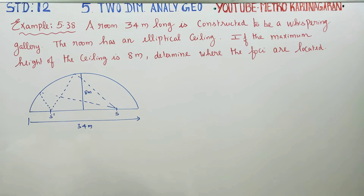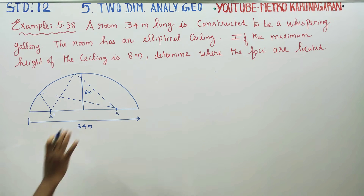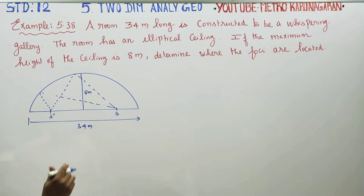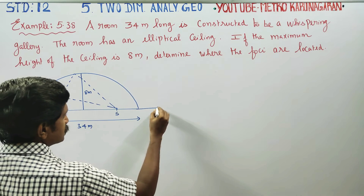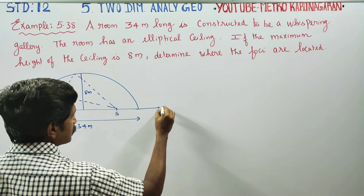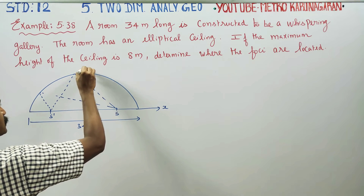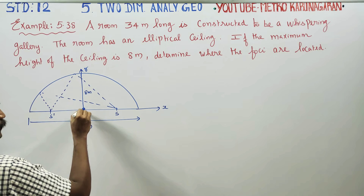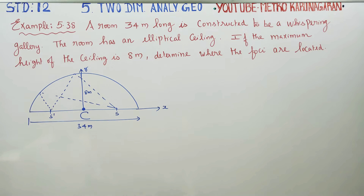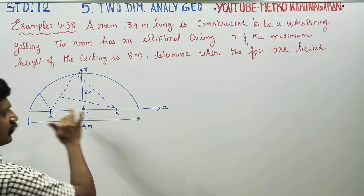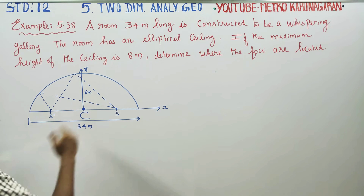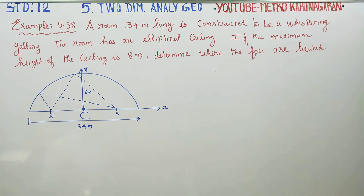The major axis is set along the x-axis, and the minor axis is along the y-axis. This is my center — capital C — the center of the ellipse. Along the major axis on either side of the center, we will find where the foci are located.